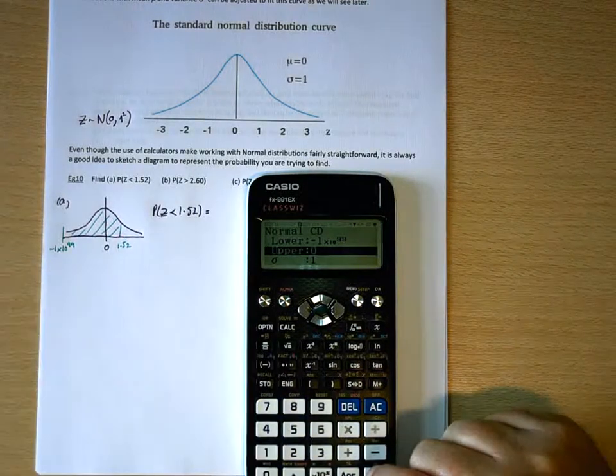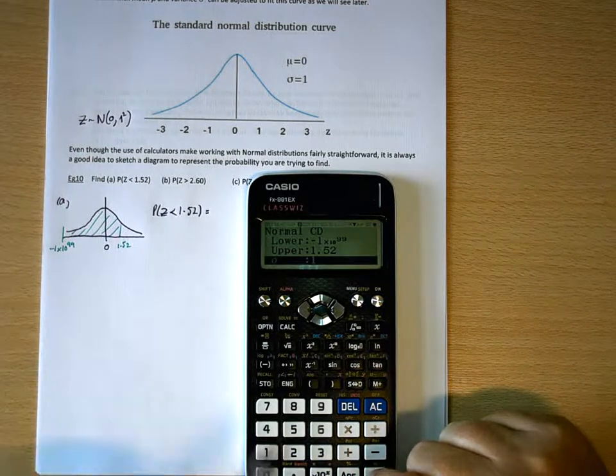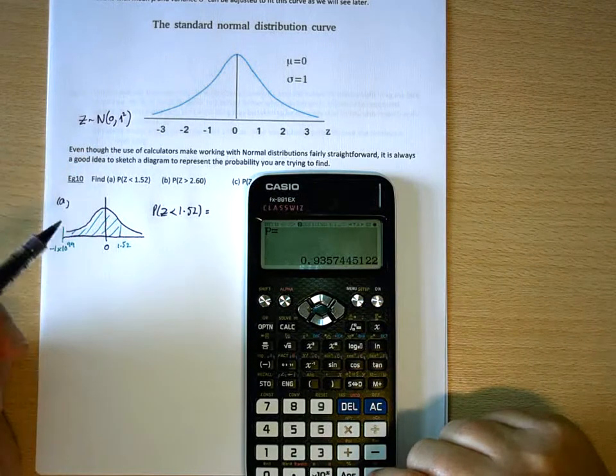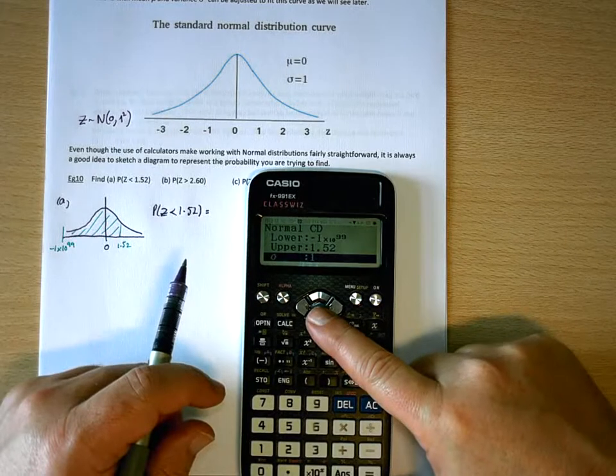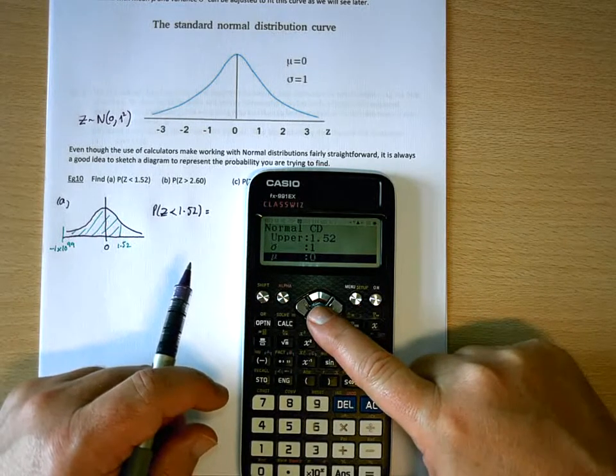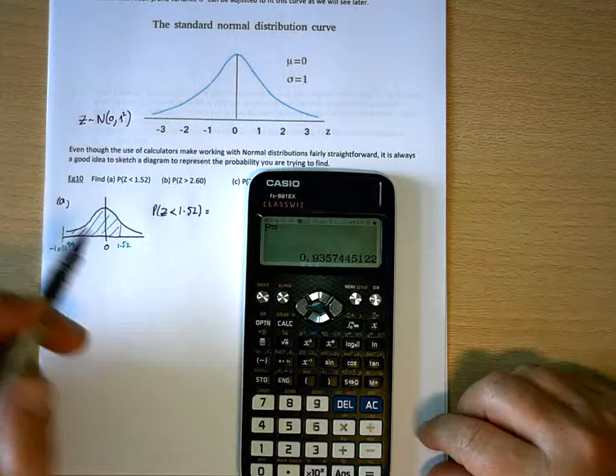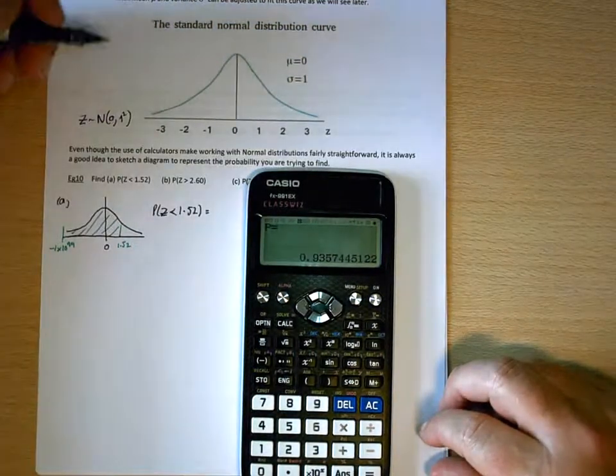My upper boundary is 1.52. The standard deviation is 1. Let's just go back to that for a sec. Standard deviation is 1, and the mean is 0, so they are right, giving me a probability of 0.9357.